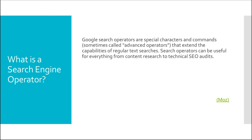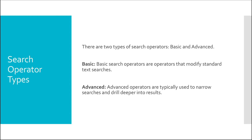So what is a search engine operator? Google search engine operators are special characters and commands that extend the capabilities of regular text search. They are useful for everything from content research to technical SEO audits. This definition comes from our friends over at Moz. There are two basic types: basic search operators, which modify standard text searches, and advanced search operators, which are typically used to narrow down searches and drill deeper into the search results.